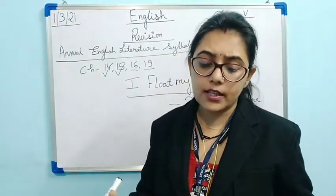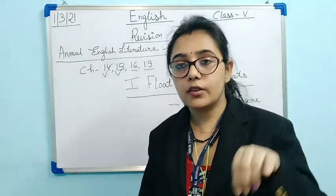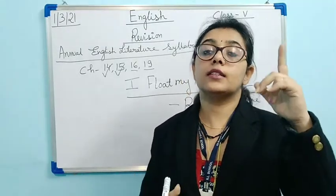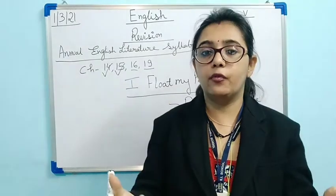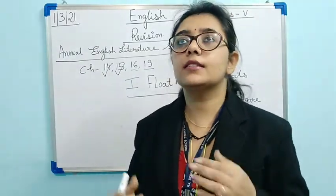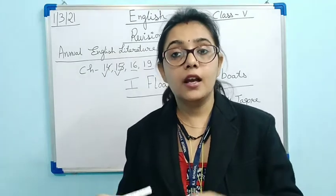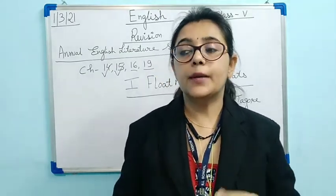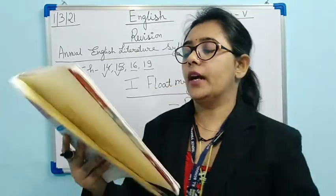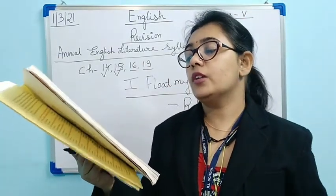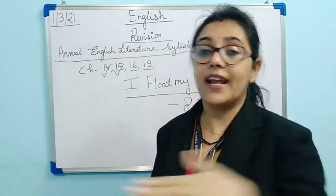When he is launching — meaning starting to sail — his paper boat, he looks at the sky and sees clouds ready to give rainfall. He is thinking some playmate of his up in the sky is sending down rain to race with his boat. 'Playmate' means a friend with whom we play. The poet imagines that the clouds are racing with his paper boat by sending rain down through the air.